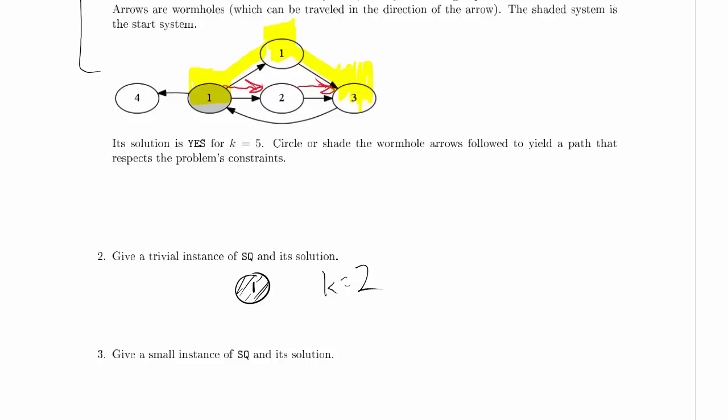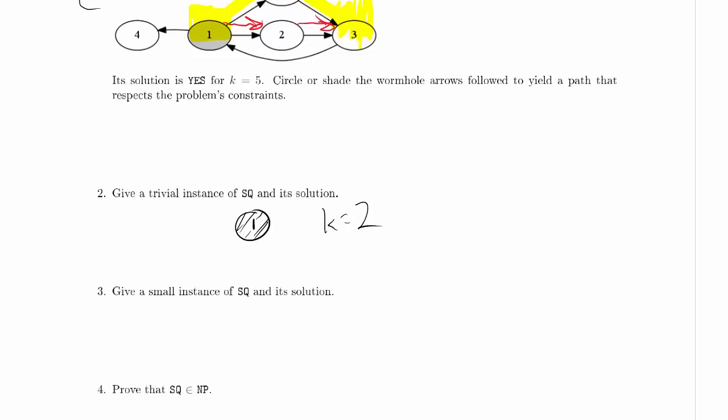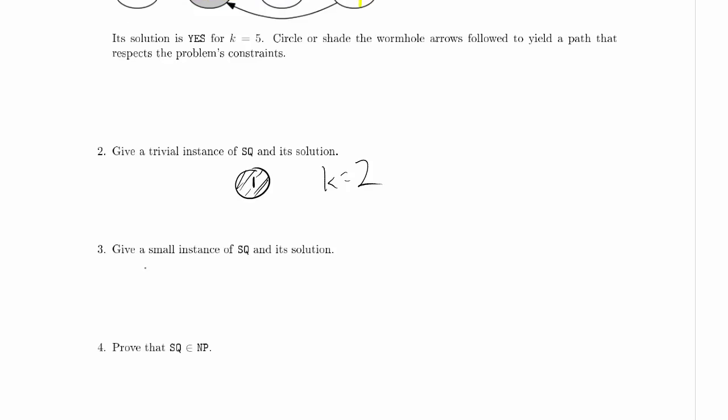Now, let's give a small instance of SQ and its solution. You could actually argue about whether this is trivial or not, right? Because you do actually have to compare k against the value of the start system. One thing this tells you is when you're solving this problem, remember that you're always going to include the value of the start system. Here's a small instance. Let's at least put a choice into this instance.